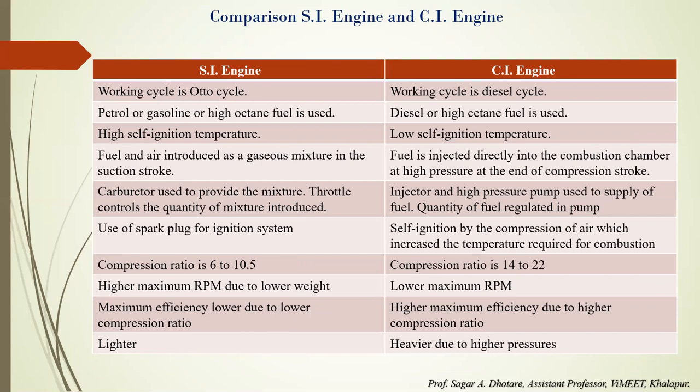In SI engines, fuel and air are introduced as a mixture in gaseous form during the suction stroke. In CI engines, a fuel injector injects high-pressurized fuel directly at the end of the compression stroke into the combustion chamber. In SI engines, a carburetor is used to mix air and fuel and control the quantity of mixture. In CI engines, an injector and high-pressure pump directly supply the fuel. In SI engines, a spark plug is used for ignition; in CI engines, compression raises air temperature sufficiently for self-ignition.